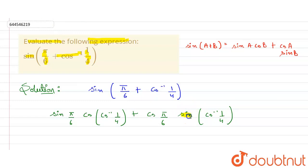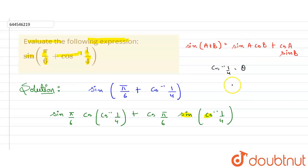We have sine outside the bracket and cos inverse inside, so let's convert the cos inverse value in terms of sine inverse. Let cos inverse of one upon four equal theta, so cos theta equals one upon four. Using cos = base upon hypotenuse, h = 4 and b = 1.